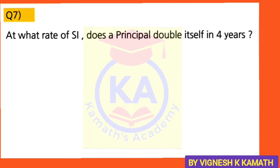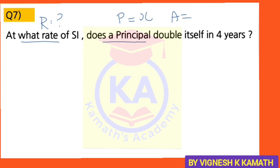Let's move on to question number 7. At what rate of simple interest does a principal double itself in four years? The question is to find R, the rate of interest. The principal doubles itself, so let's consider the principal to be X. The principal doubles itself in four years means at the end of four years, your principal value should be doubled — that is, A = 2 times P = 2X.